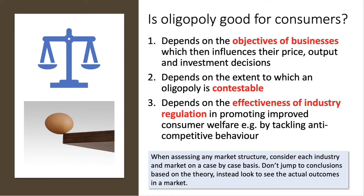The second key 'it depends on' point is the extent to which an oligopoly, even with a small number of dominant firms, is actually contestable. How easy is it for very small firms to come in and challenge the existing firms? If you have a contestable oligopoly, you have both the threat of competition and actual competition, which can lead to much more efficient outcomes from the point of view of the consumer.